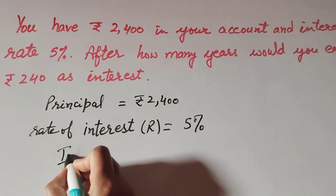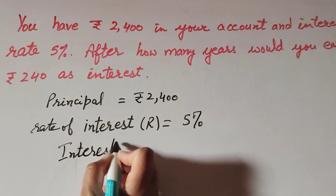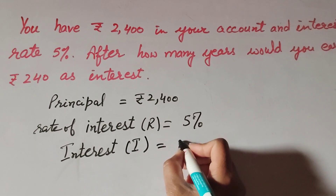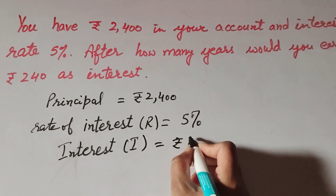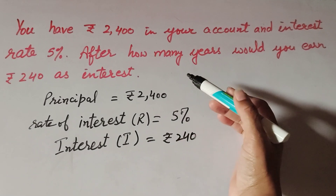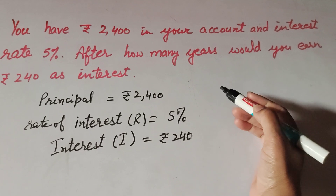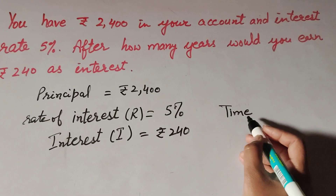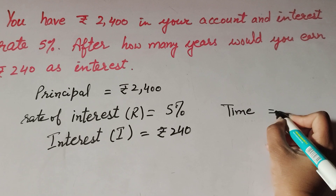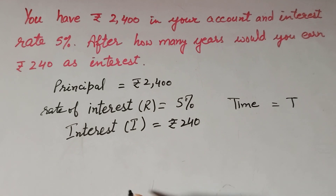The interest I is given as rupees 240. How many years means we have to find time — we suppose it is equal to T, and that is what we have to find.